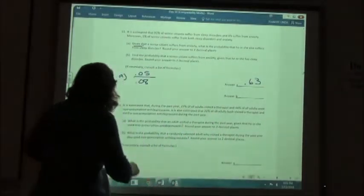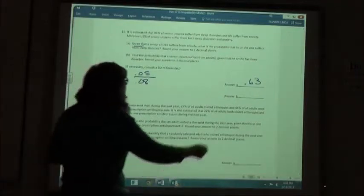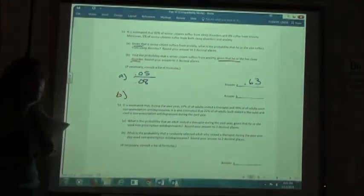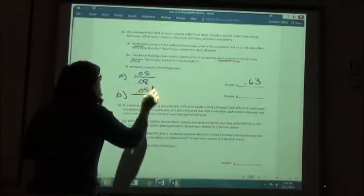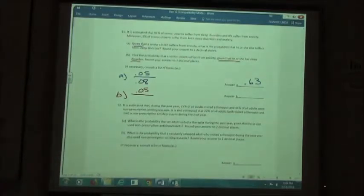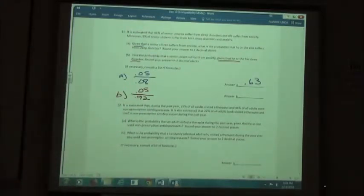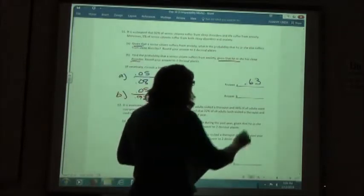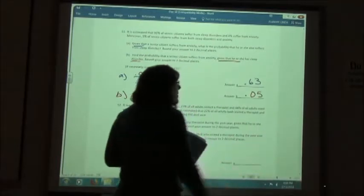Part B: Find the probability that a senior citizen suffers from anxiety given that they have a sleep disorder. Both goes on top, so the both is 5%. The sleep disorder is the given part of that, which was 92%. Rounding that off to two decimal places, I'm going to have 0.05 for my answer.